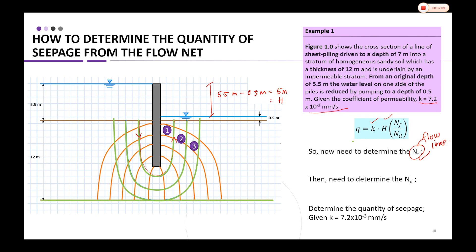Don't forget, the boundary at the bottom here, boundary AB, is also considered one of the flow lines. So we have Nf equal to 4.